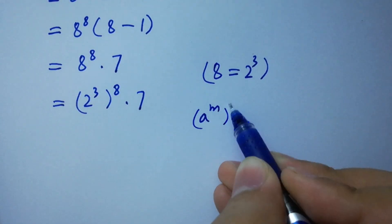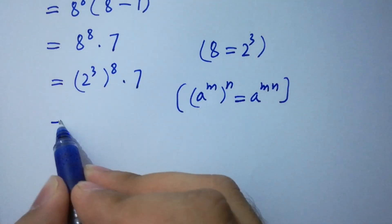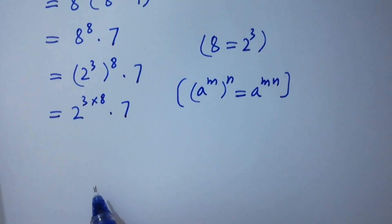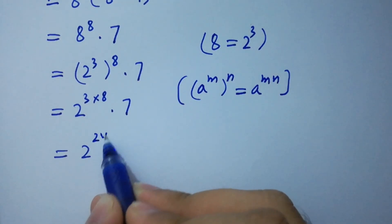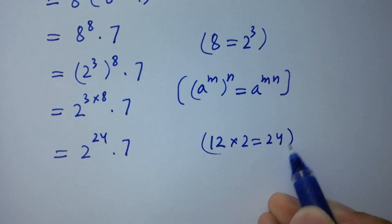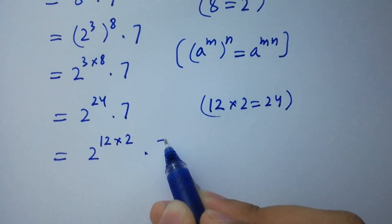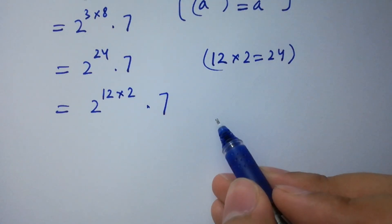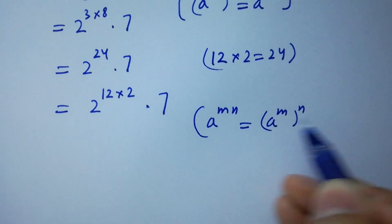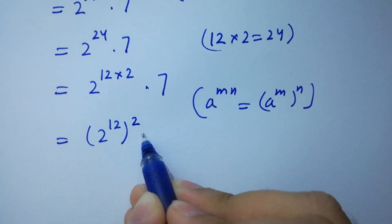Using the rule: a to the power m, to the whole power n, equals a to the power m times n. We have 2 to the power 3 times 8, times 7. 3 times 8 is 24, so we have 2 to the power 24 times 7. We can rewrite this as 2 to the power 12 to the whole power 2, times 7.